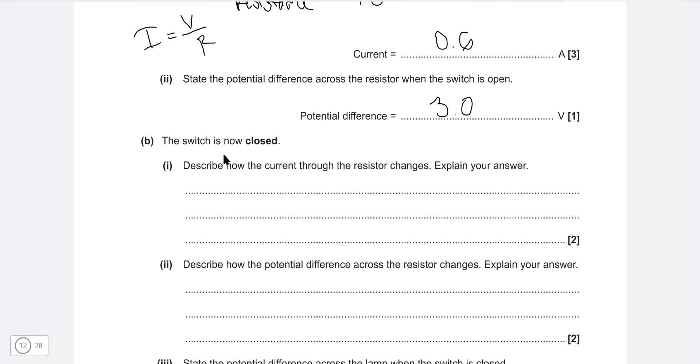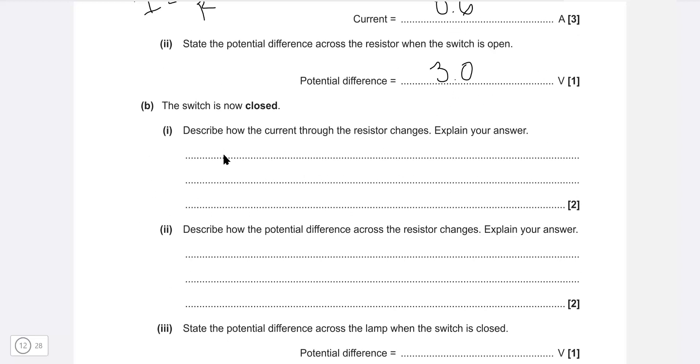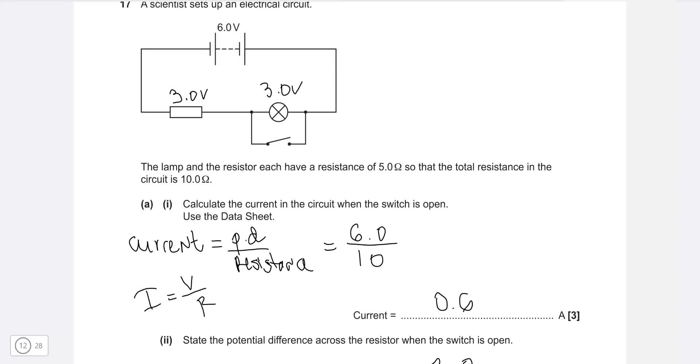Part B: the switch is now closed. Describe how the current through the resistor changes. This is actually quite tricky. As soon as we close the switch, the current, which let's say will be going through here positive to negative, will then choose to go through this path here, which is the path of least resistance, rather than the actual filament lamp. This means that the overall resistance in the circuit will decrease.